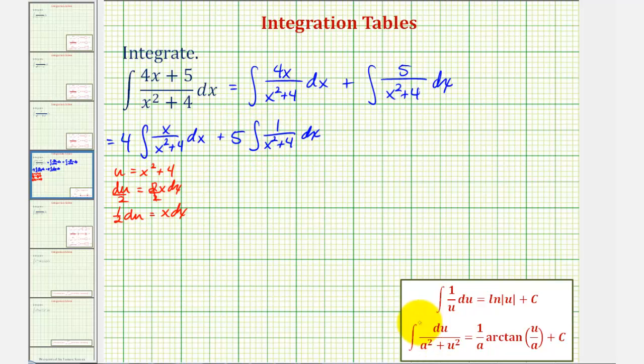Notice the second integral fits this form here, where the denominator would be a squared plus u squared, where a squared is our constant. So let's rewrite this as four plus x squared, instead of x squared plus four.